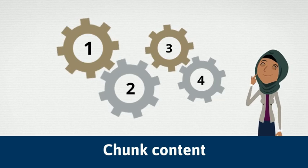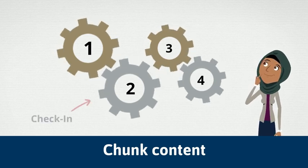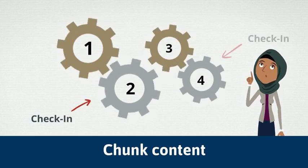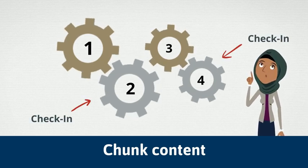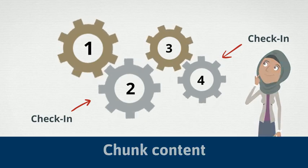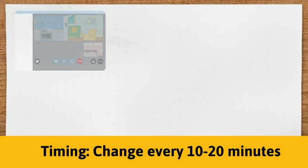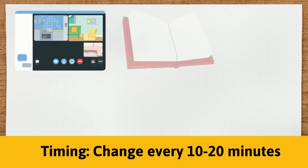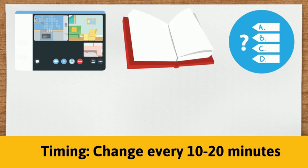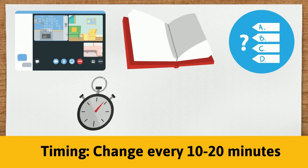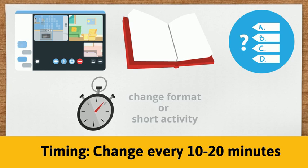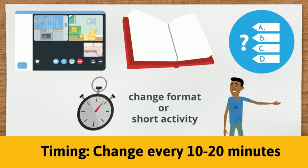You will also want to identify logical places for checking in with students to see if they are ready to move on. Next, think about the timing. A good heuristic is about 10 to 20 minutes per chunk, especially for straight lecturing, whether recorded or in person. If a chunk is too long or is especially challenging, find a place part way through where you can change the format or do a short activity.